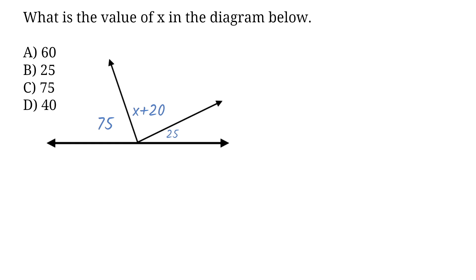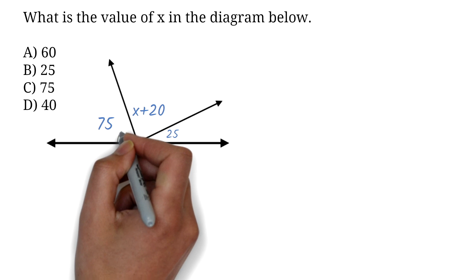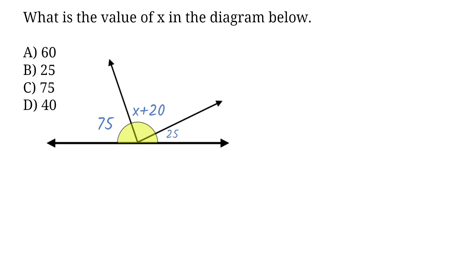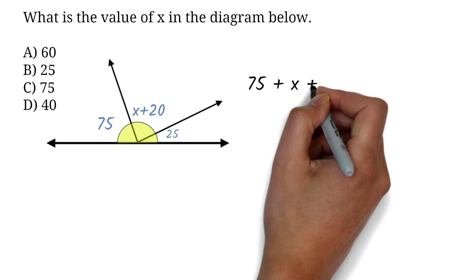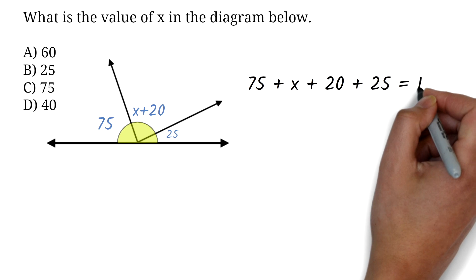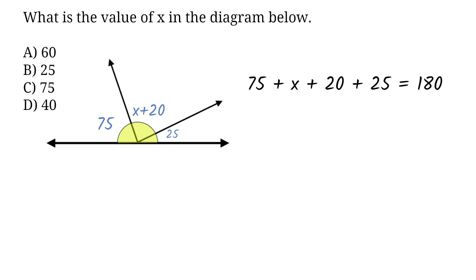What is the value of x in the diagram below? A) 60, B) 25, C) 75, D) 40. The work here is being able to identify that this is angles on a straight line. Angles on a straight line adds up to 180 degrees. Once you know that, you will just add everything and equate it to 180. Then solve the resulting equation. So, here, we will add 75 + x + 20 + 25 = 180. We can add the numbers 75 + 20 + 25 to get 120.